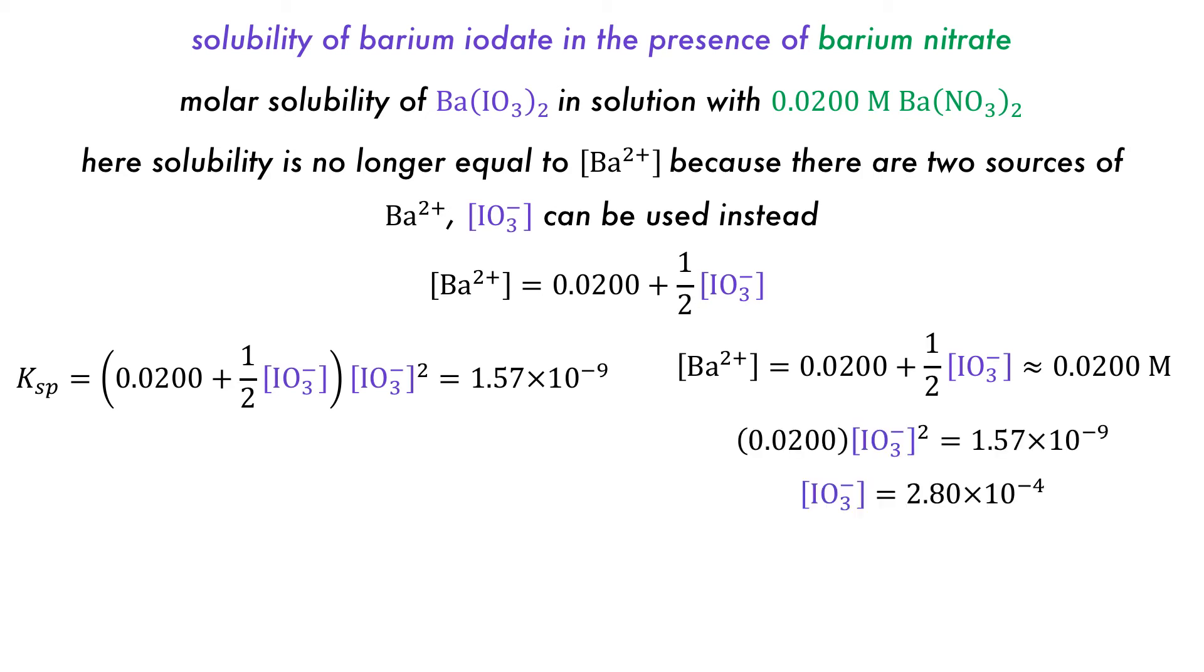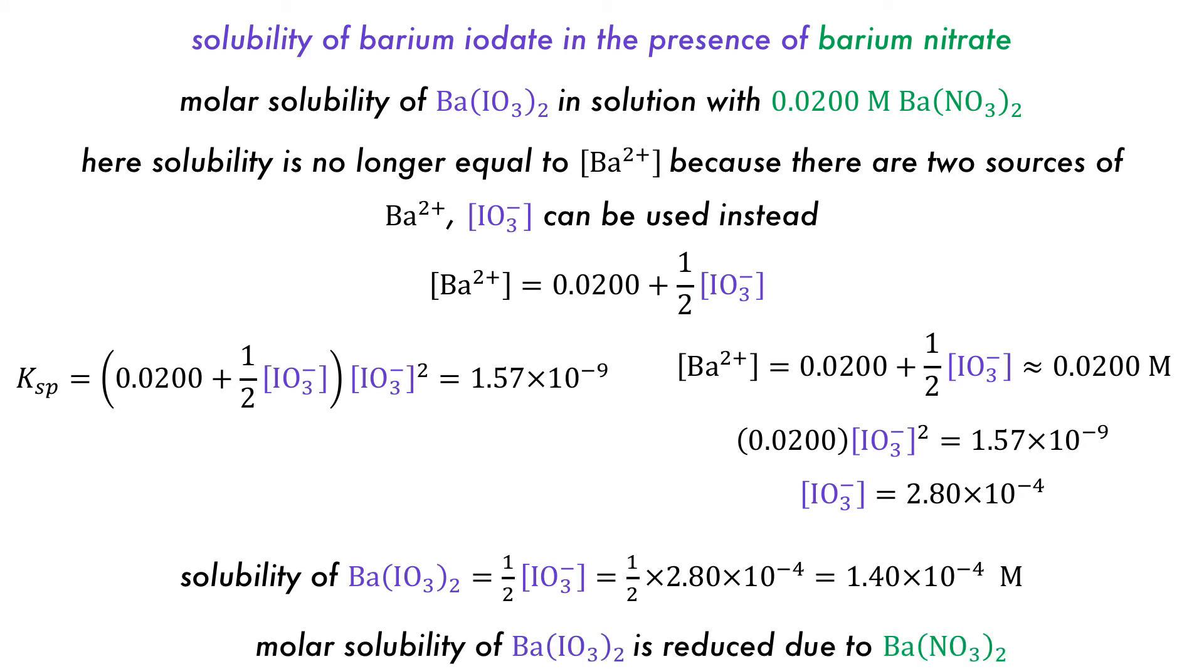The simplified equation can be used to work out the iodate concentration and therefore the barium iodate solubility, which is now much lower due to the presence of the common ion from the barium nitrate.